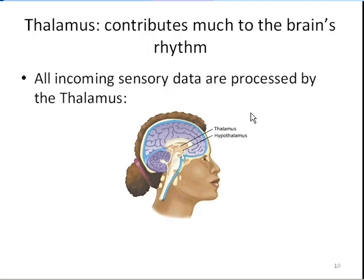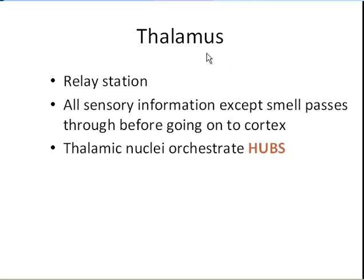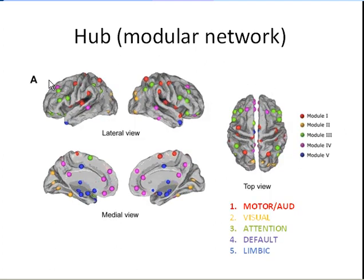The thalamus is the most important deep brain structure when it comes to generating the EEG rhythm. All incoming sensory data are processed by the thalamus, except for the sense of smell. The thalamus is a relay station. The thalamic nuclei orchestrate the hubs or modular networks of the brain. Here we see an example of the five hubs or modular networks of the brain.